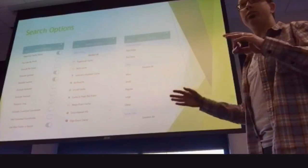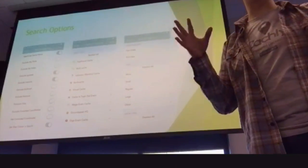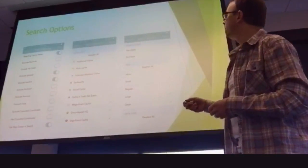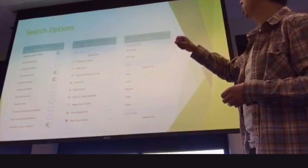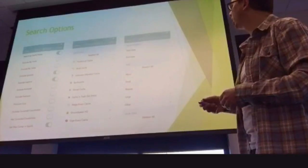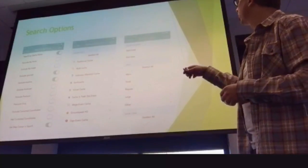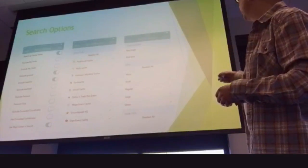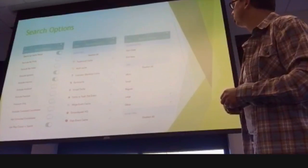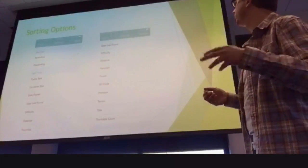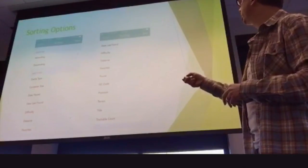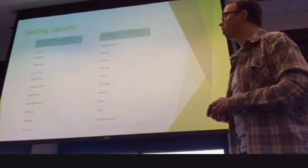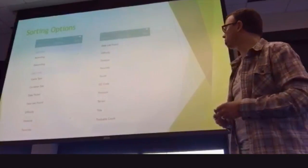There are a lot of search options — you can toggle these on or off: cache name, exclude your finds, exclude your hides, premium only, cache type, cache publish date, size, and all different kinds of ways to search. There are also a lot of different ways to sort — by cache type, container size, number of favorites. You can also search by number of favorites so you can see all the favorites in your particular area.